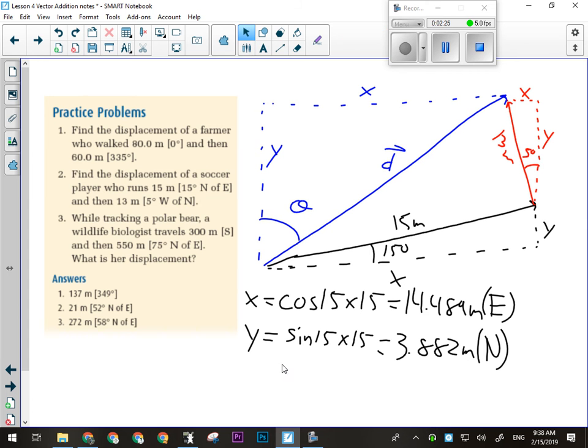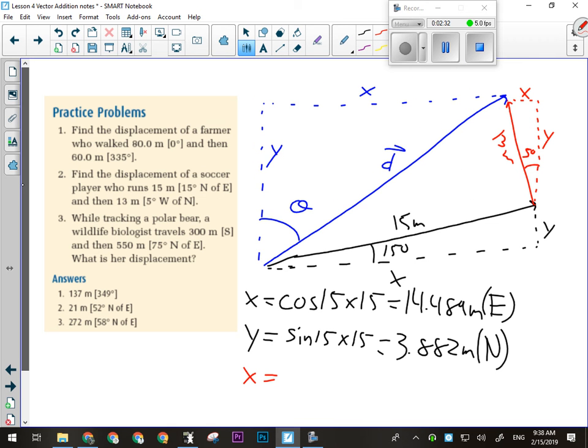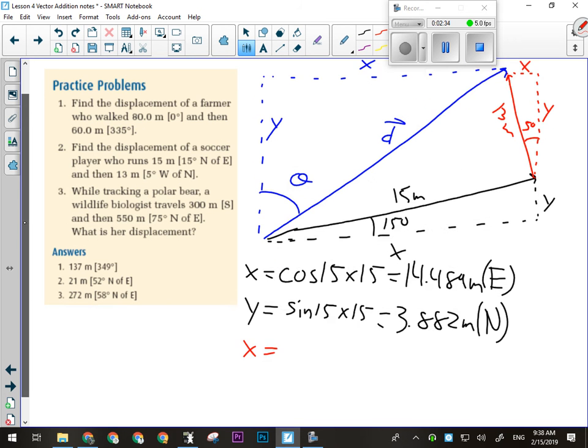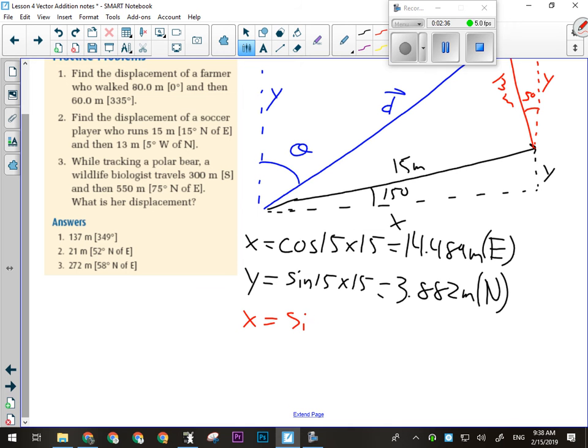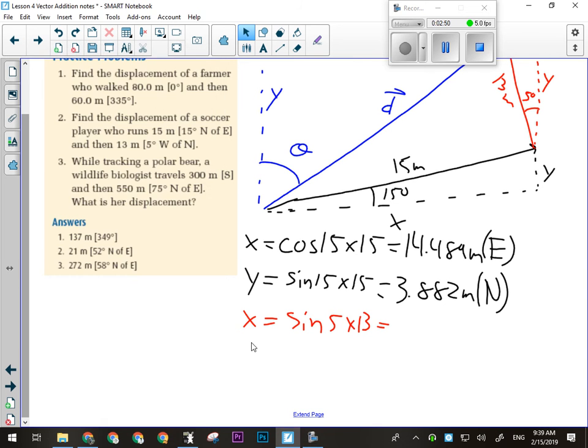Then my next step is to do the same thing for the red triangle. Now, on the red triangle, the x component is the opposite side. So for that one, I'm gonna use sine. So I'm gonna go sine of five degrees times 13 meters. That's obviously gonna be a pretty small side. All right, so 1.133 meters. And that is gonna be west.